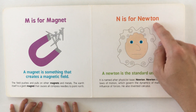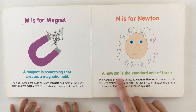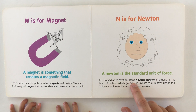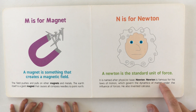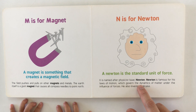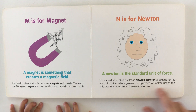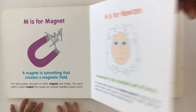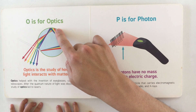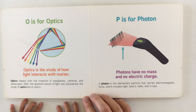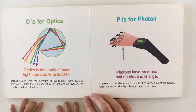N is for newton. A newton is a standard unit of force, named after physicist Isaac Newton. Newton is famous for his laws of motion, which govern the dynamics of matter under the influence of forces. He also invented calculus.